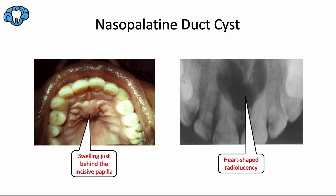The next four lesions are non-odontogenic fissural cysts. A fissural cyst forms along the fissures or lines of fusion during facial development — these cysts can form wherever tissues fail to fuse properly. The nasopalatine duct is supposed to degenerate in humans, but it might leave behind remnants within the incisive canal, causing the nasopalatine duct cyst, also called the incisive canal cyst. It's the most common non-odontogenic cyst of the oral cavity. It's located at the midline, just posterior to the incisive papilla, and leaves a characteristic heart-shaped radiolucency in the nasopalatine canal between the two maxillary central incisors, as seen on the occlusal film. All nearby teeth remain vital.